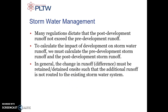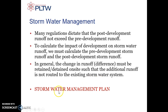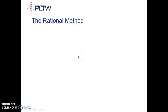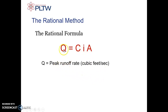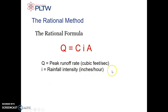In general, the change in runoff — the difference — has to be retained or detained on-site so the additional runoff is not routed into existing stormwater systems or streams. To do this, you use what's called the rational formula: Q equals C times I times A. Q is the peak runoff rate, measured in cubic feet per second. I is the rainfall intensity in inches per hour — this comes from a chart. A is the area in acres.